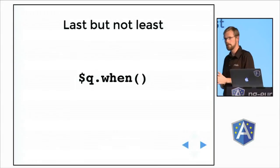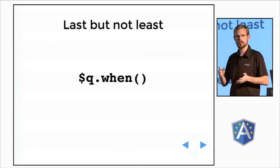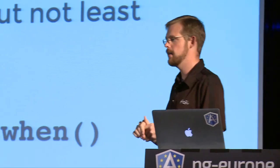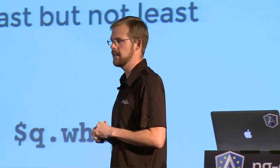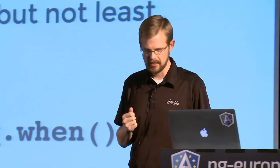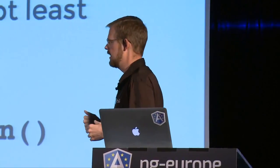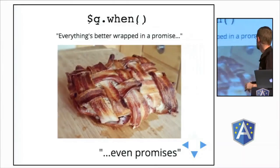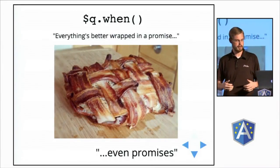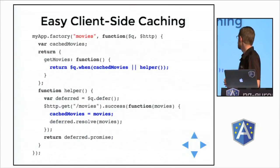This is my second favorite part of the queue service — the when method. When I explain what when is to people, they're often like, I don't understand why that would be useful. Conceptually, the when function is about taking values of any kind — wrapping them in promises and returning them. You can even pass in other promises, wrap those in promises and return them, or you can pass primitive values or objects and return them wrapped in a promise.